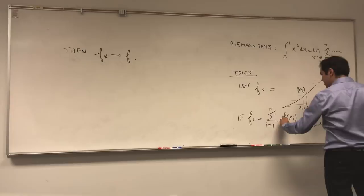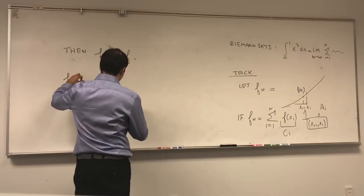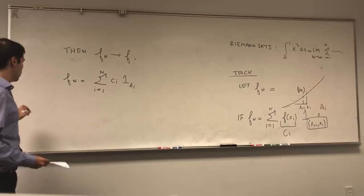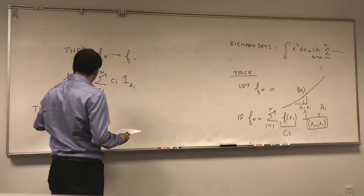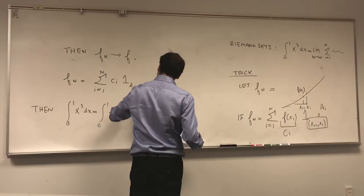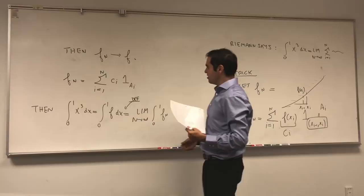But what is fn? Let's call this value ci and this little thing ai. So, fn is sum from 1 to n of ci indicator function of ai. So, how do we evaluate the integral of f, the Lebesgue integral? Then, the Lebesgue integral from 0 to 1 of x cubed dx is the Lebesgue integral from 0 to 1 of f dx. By definition, the limit of the integrals of fn, the Lebesgue integrals of fn, but how do you evaluate Lebesgue integrals?